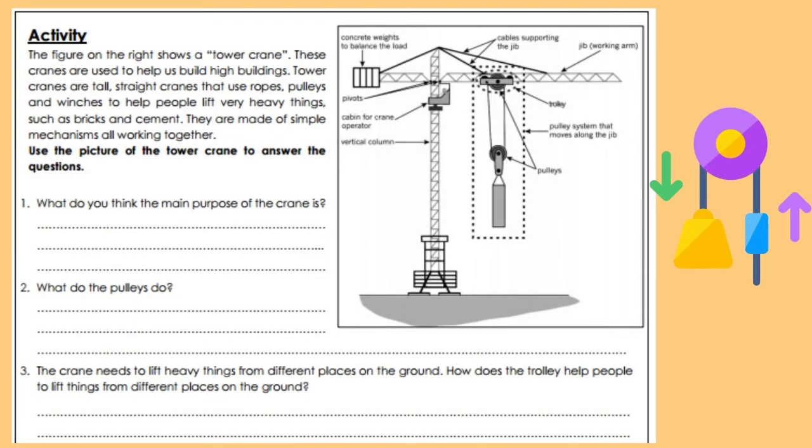Activity: The figure on the right shows a tower crane. These cranes are used to help us build high buildings. Tower cranes are tall, straight cranes that use ropes, pulleys, and winches to help people lift very heavy things such as bricks and cement. They are made of simple mechanisms all working together. Use the picture of the tower crane to answer the questions.